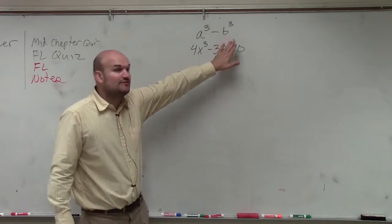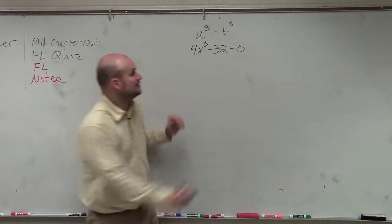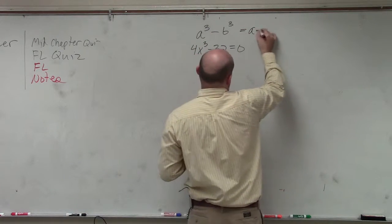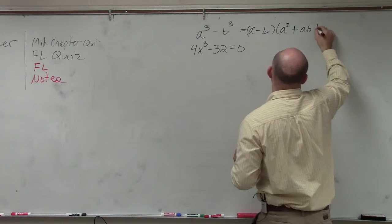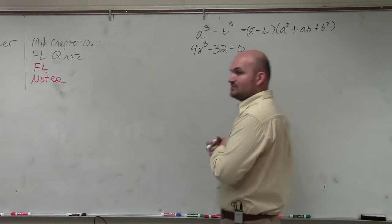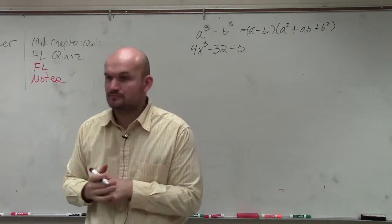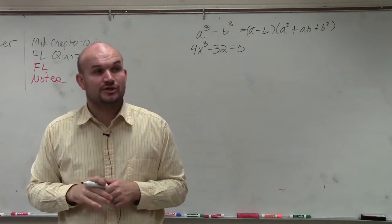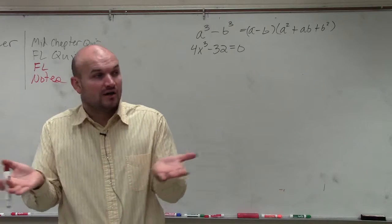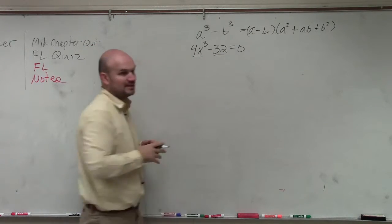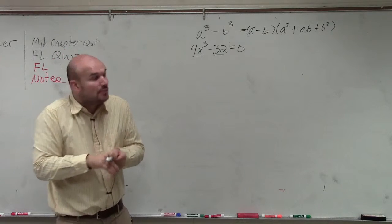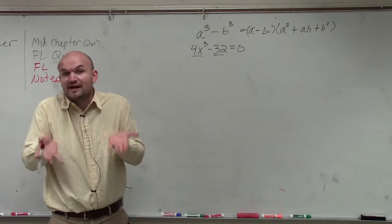So the factored form of a cube term minus another cube term was a minus b times a squared plus ab plus b squared. That was in your note. That was provided to you. So all we're simply going to do is now identify, is this in that format? Do we have something minus another something?